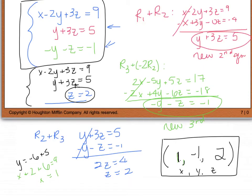I want to reiterate: as you do each step, please make sure to show your row operation labels — like r1 plus r2, or r3 plus negative 2 r2 — so that I can help you with partial credit as much as possible.